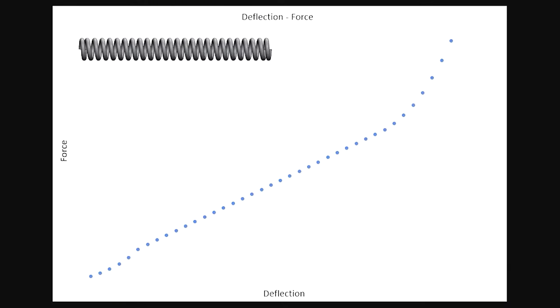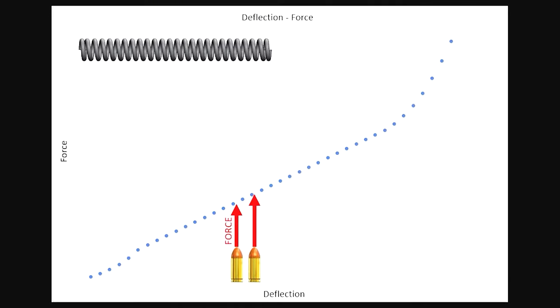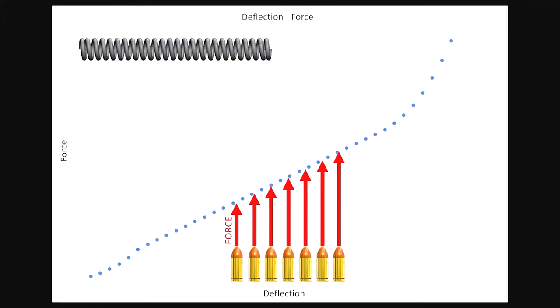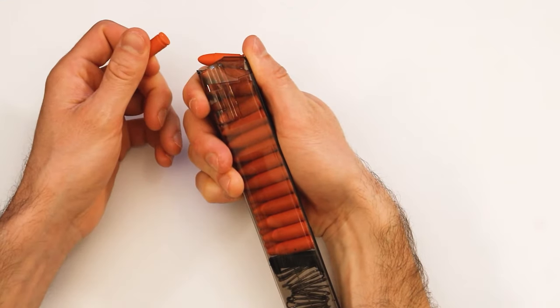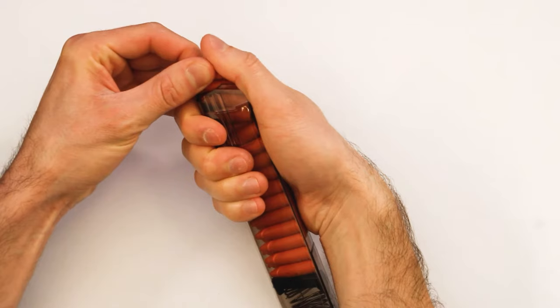As the spring is compressed by each successive cartridge, the force of the spring grows higher and higher, making it harder to load each successive cartridge. While the initial rounds are easy to load, the final rounds can feel impossible.